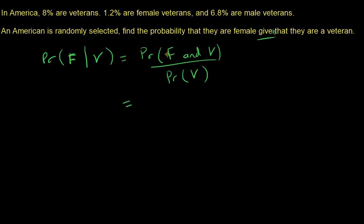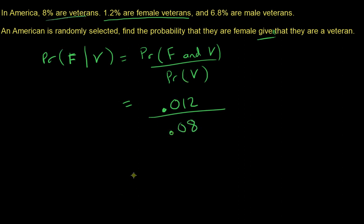The probability of being female and a veteran is 0.012, since 1.2% are female veterans. Divided by 0.08, since 8% are veterans. Calculating this gives 0.15. So the probability of being female given that you are a veteran is 0.15 — or 15% of veterans are female.